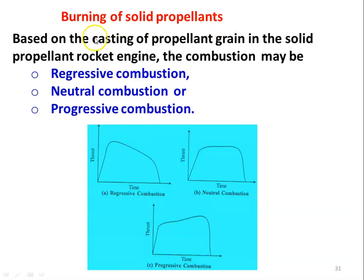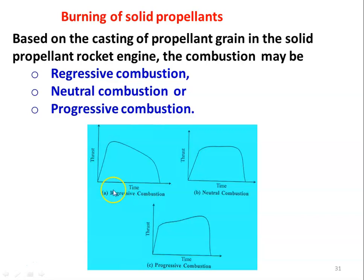Regarding the burning of solid propellant: based on the casting of the propellant grain in the solid propellant rocket engine, the combustion may be regressive, neutral, or progressive. Once combustion is initiated, the thrust produced over time defines the combustion pattern. In the diagram, the x-axis represents time from the start of combustion and the y-axis represents thrust produced by the gas jet.